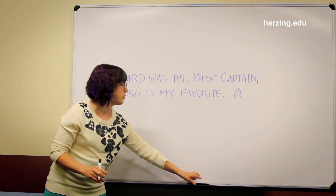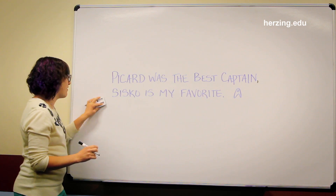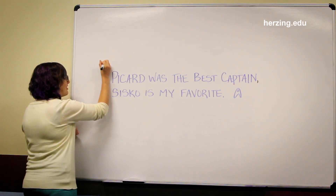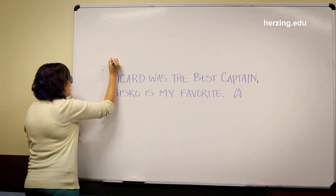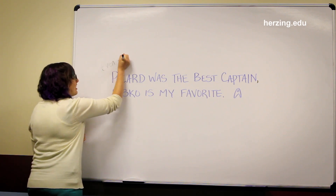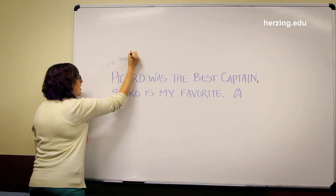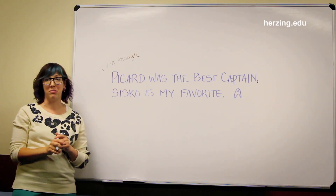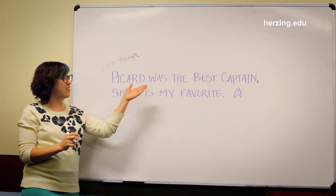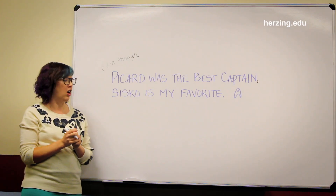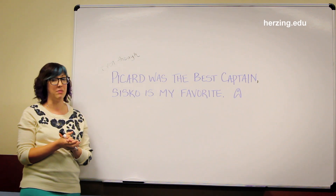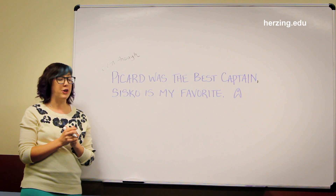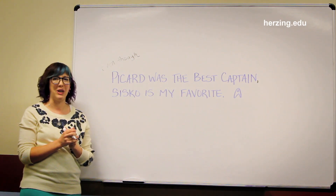You can also do this by adding information to the beginning of the sentence. So we could say, "Even though Picard was the best captain, Cisco is my favorite." Now again, this isn't a dependent clause — it needs the rest of the sentence to make sense. But we've given a little bit more information to tell our reader how these two thoughts are related.